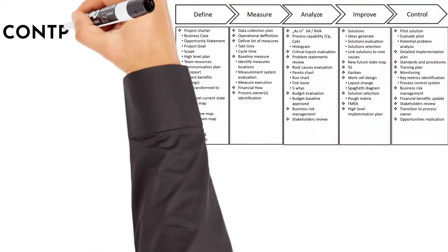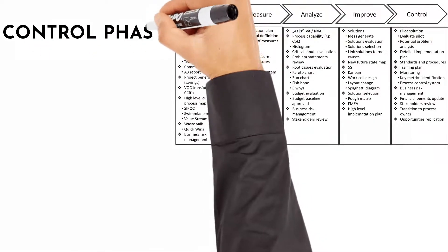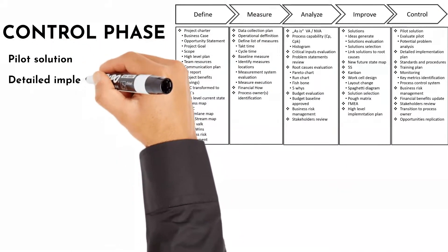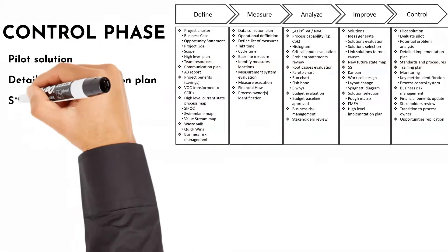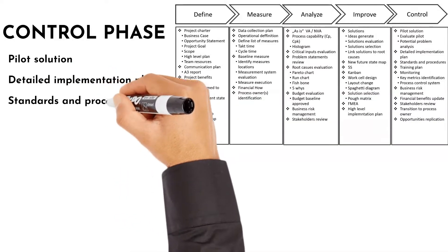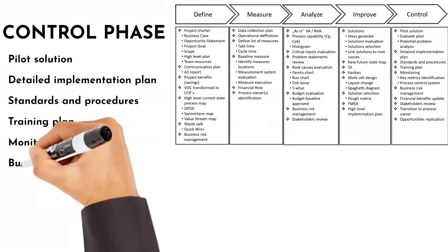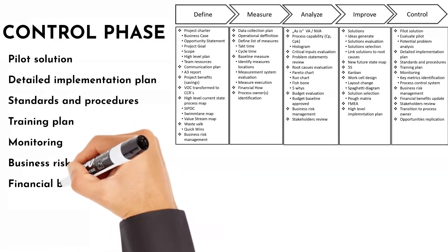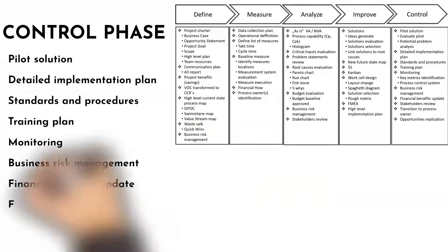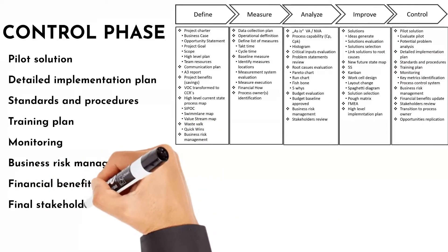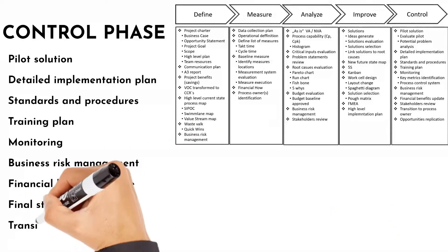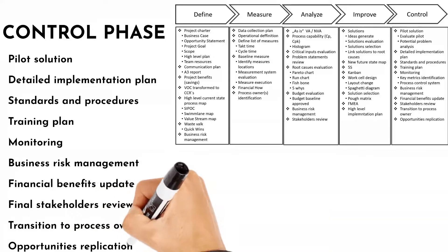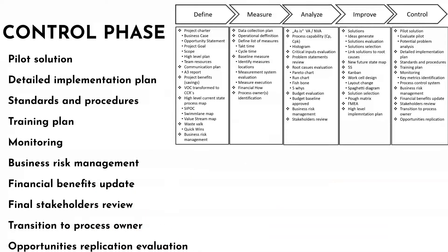And finally, the Control phase main tools are: pilot solution, detailed implementation plan, standards and procedures, training plan, monitoring, business risk management, financial benefits update, final stakeholders review, transition to process owner and opportunities replication evaluation.